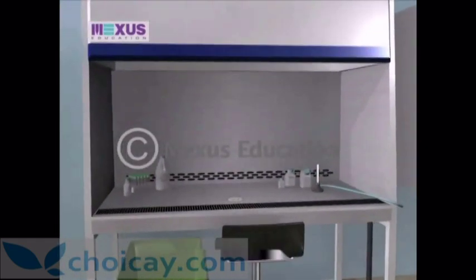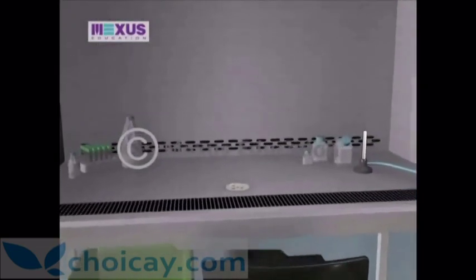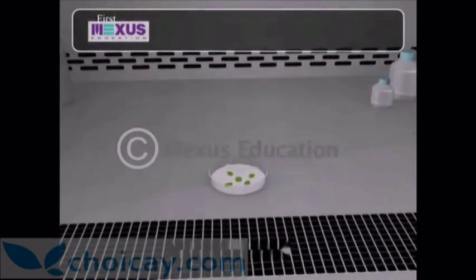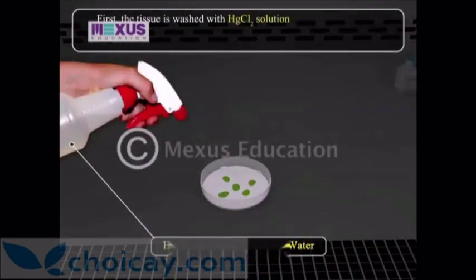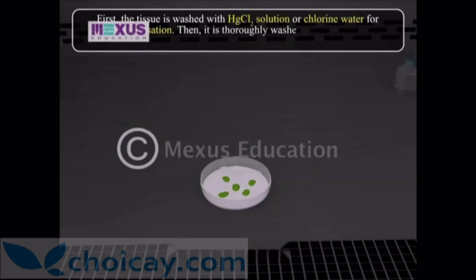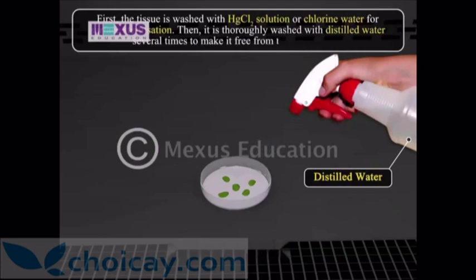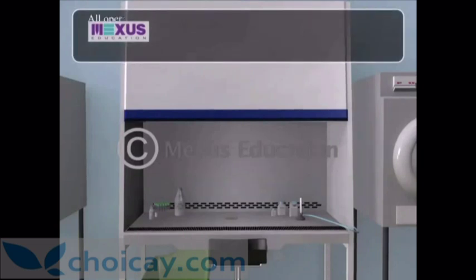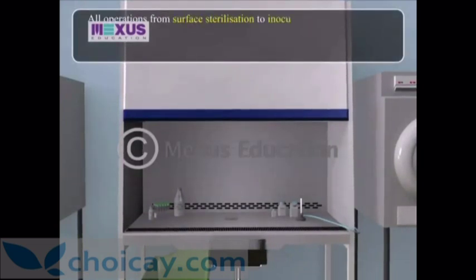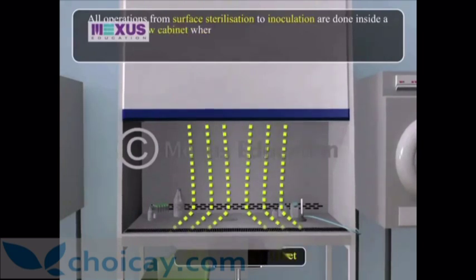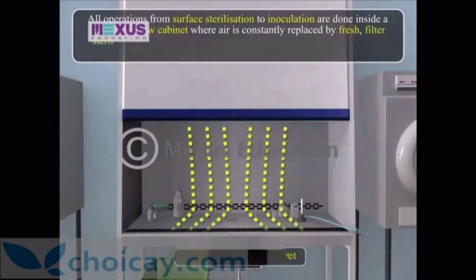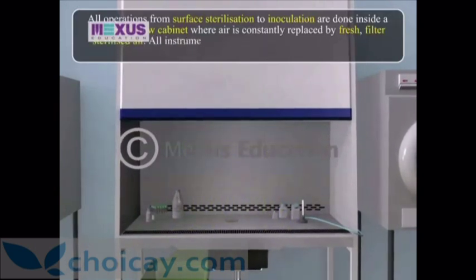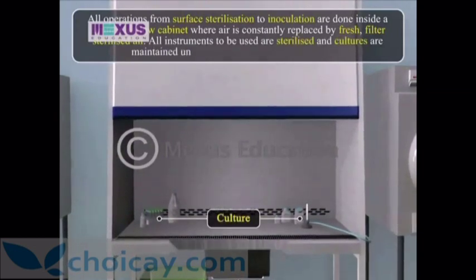The transfer of plant tissues inside the culture container is done in completely aseptic conditions. First, the tissue is washed with mercury chloride solution or chlorine water for surface sterilization, then thoroughly washed with distilled water several times to make it free from the disinfectant. The tissue is then transferred inside the culture vials in an aseptic environment. All operations from surface sterilization to inoculation are done inside a laminar airflow cabinet, where air is constantly replaced by fresh, filter-sterilized air. All instruments to be used are sterilized, and cultures are maintained under controlled temperature and light.